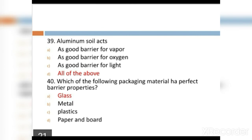MCQ 39: Aluminium foil acts: Option A: as good barrier for vapor. Option B: as good barrier for oxygen. Option C: as good barrier for light. Option D: all of the above. Option D, all of the above, is the right answer.